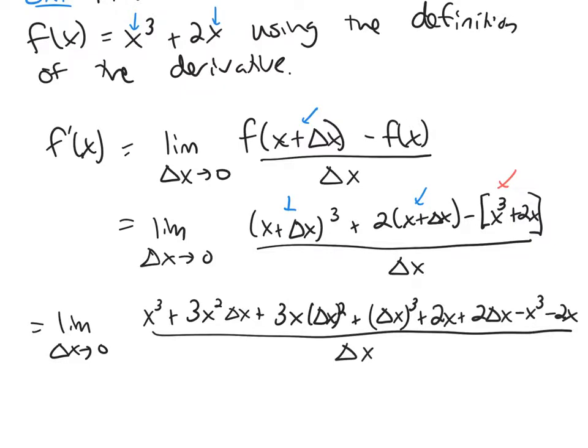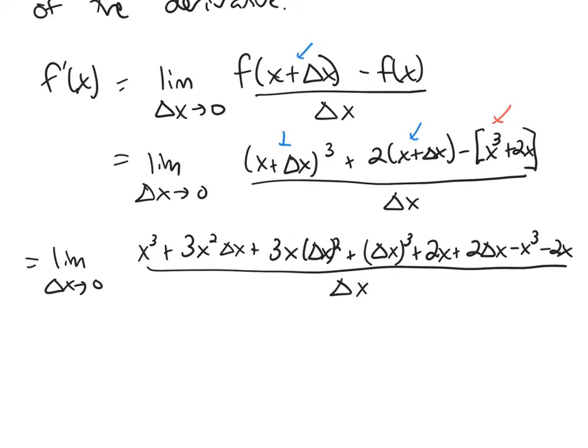And then we're going to start cancelling terms in the numerator. I have an x cubed and a minus x cubed, a minus 2x and a positive 2x. And that's everything that cancels.